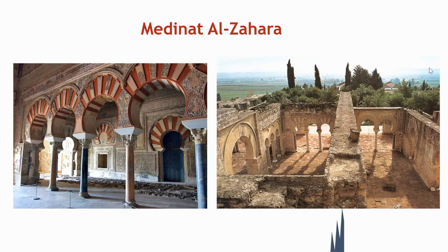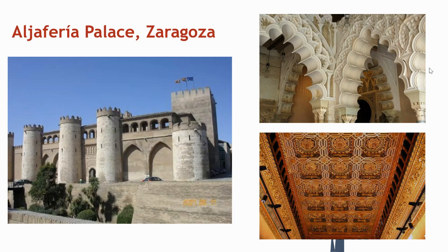This is Medina al-Zahra, found right outside of Seville — a recent find where they just uncovered this entire palace structure and are still excavating and renovating it. Here we have a Christian castle, a little bit after the reconquest, where on the outside it looks like a traditional Western medieval castle, but inside you have a very traditional Islamic style roof and arches that are very Islamic inspired.